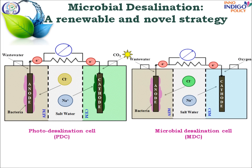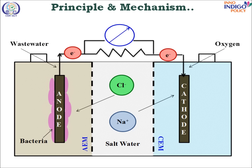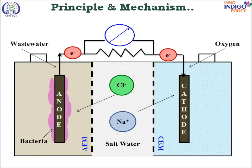Here we can see the microbial desalination cell and photodesalination cell, which is three-chambered, comprising an anode chamber, cathode chamber, and a middle desalination chamber. The mechanism is: in the anode chamber, when wastewater is added it breaks down into protons and electrons. Electrons flow through the external circuit towards the cathode chamber and the salt splits into anions and cations. Anions move towards the anode chamber and cations move to the cathode chamber through their respective membranes.